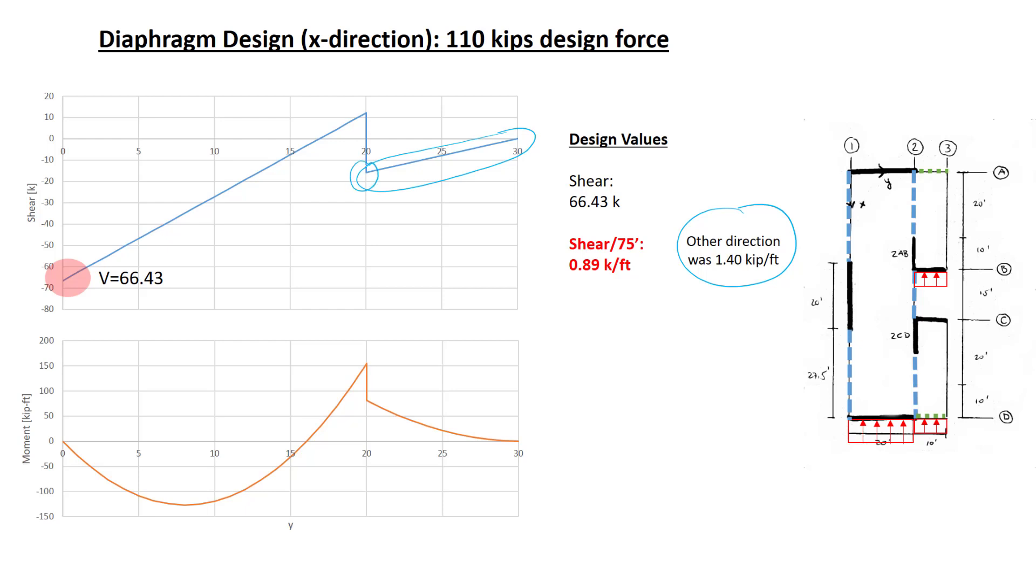For a moment, we'll need to look at two different sections. Between grid lines 1 and 2, the long section, the largest value is given right here, 154.33 kip feet. We'll divide that value by the 75 foot depth to get the chord force, and we have 2.06 kips being the chord force between segments 1 and 2.